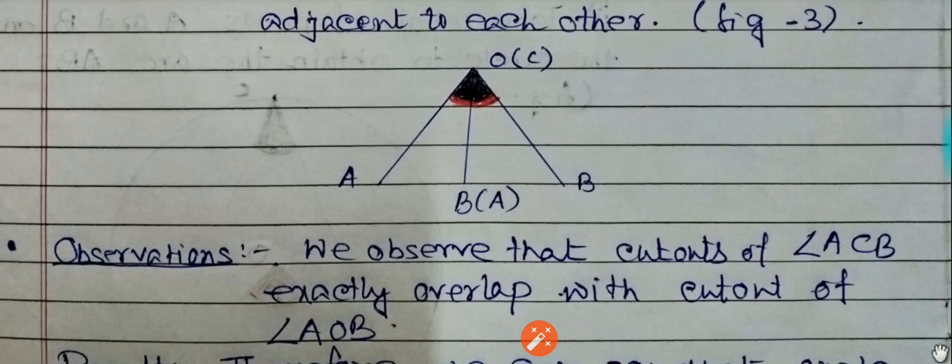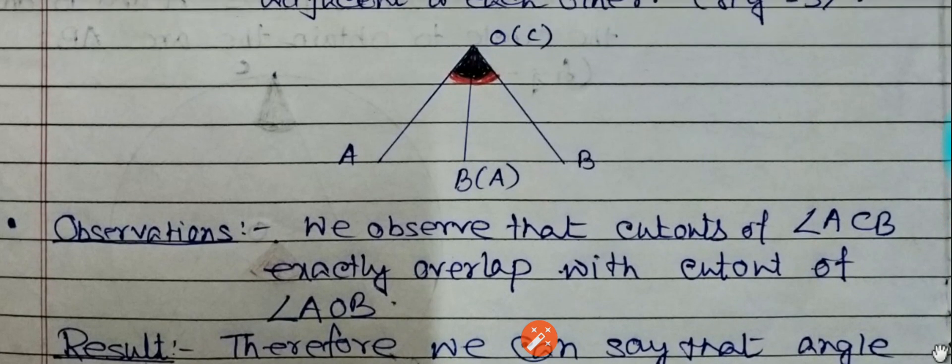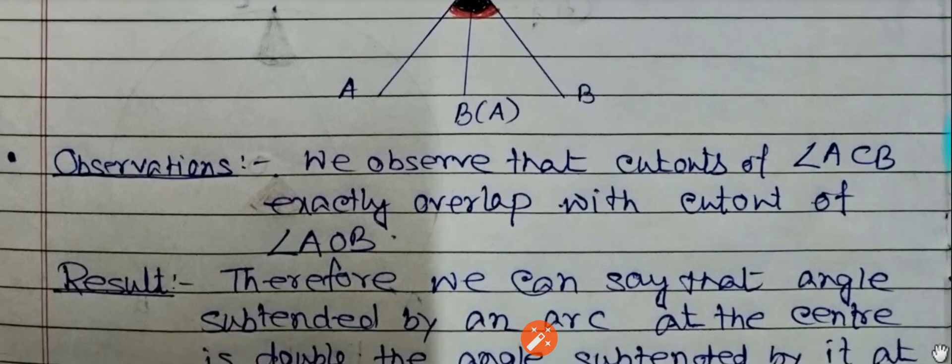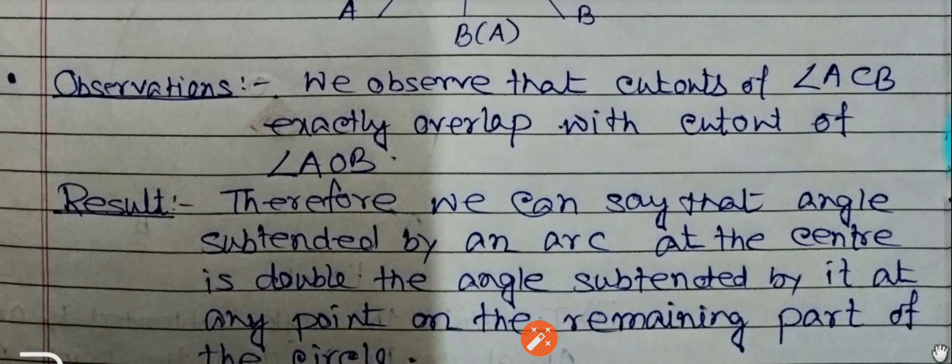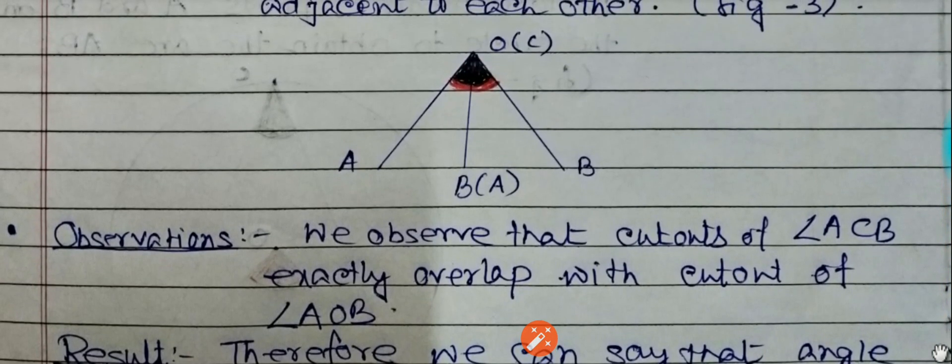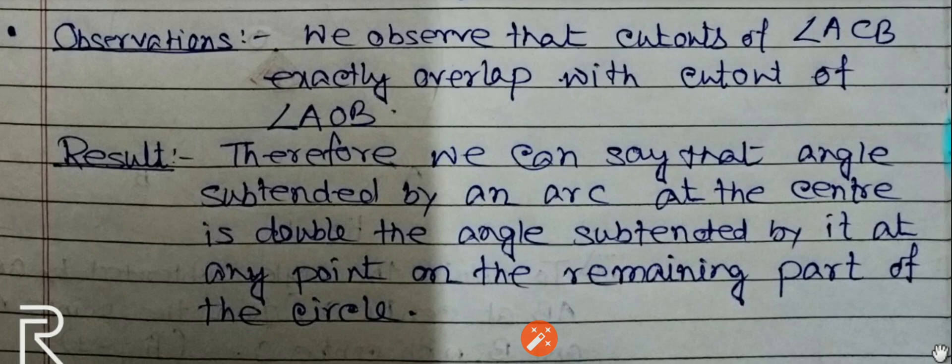Now from that we can say that twice angle ACB is equal to angle AOB. Therefore, we can say that the angle subtended by an arc at the center is double the angle subtended by it at any point on the remaining part of the circle. Thank you.